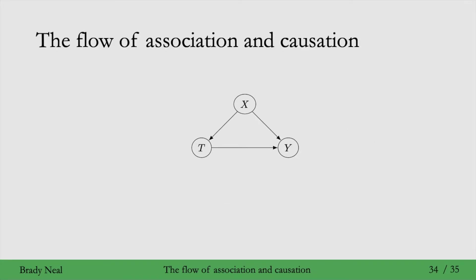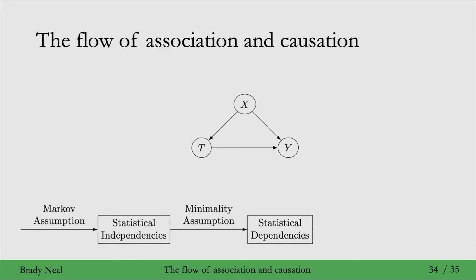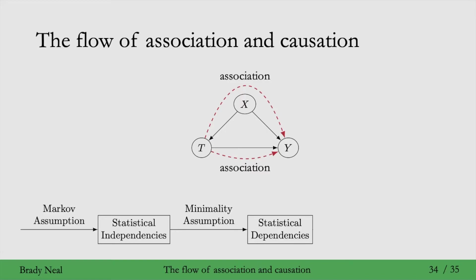All right, so let's get towards wrapping things up and talk about the flow of association and causation in this basic graph. Given the Markov and minimality assumption, we can talk about association flowing in this graph. Association flows directly from t to y and from y to t — it's symmetric — and it flows from t to x to y and from y to x to t as well.